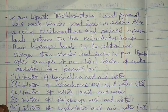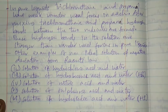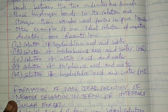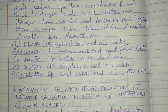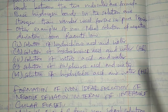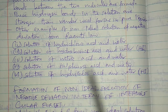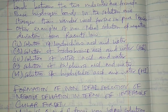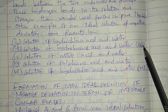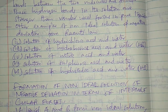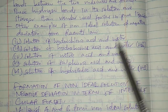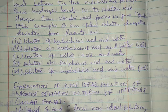Other examples of non-ideal solutions of negative deviation include: a solution of hydrochloric acid in water, hydrobromic acid in water, nitric acid in water, and hydroiodic acid (HI). Hydrochloric acid is HCl, nitric acid is HNO3.